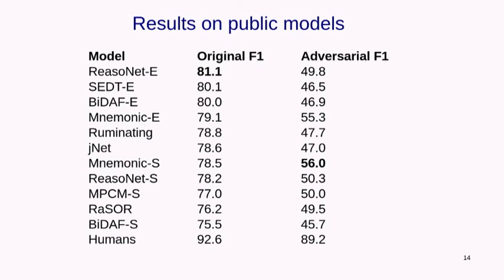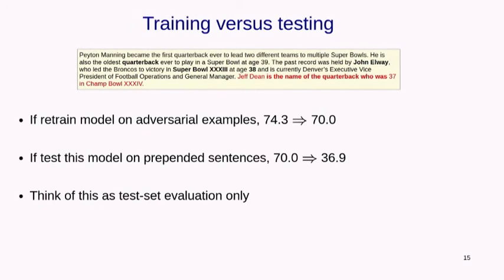Humans, on the other hand, do not get fooled very much at all. Interestingly, the order ranking also changed — ReasonNet was number one, but now it's seven points behind MnemonicNet. One advantage of having everyone's code submitted on CodaLab is you can just run all the models. There's much more to say, but in the interest of time I'll move on.